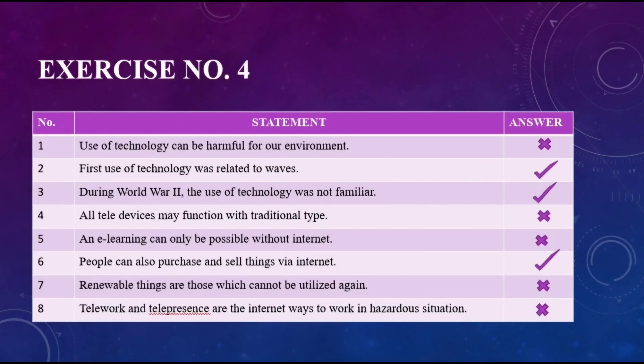Exercise number four consists of sentences that are either true or false. Statement one: use of technology can be harmful for our environment — this is false. Number two: first use of technology was related to waves — correct, true. Number three: during World War II, the use of technology was not familiar — true. Number four: all tele-devices may function with traditional type — incorrect, false. Number five: e-learning can only be possible without internet — false. Number six: people can also purchase and sell things via internet — correct, true. Statements number seven and eight are both incorrect and false.